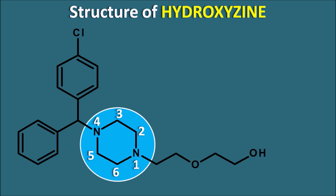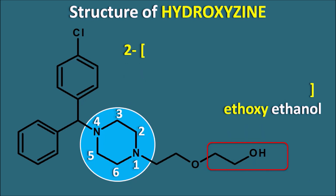Hydroxyzine is a diphenylmethane attached with piperazine at the fourth position. For the IUPAC name, the principal functional group is the OH (alcohol) group, which is attached by a two-carbon chain, so the suffix of the name is ethanol. This ethanol is attached by oxygen and then an ethyl bridge, giving a 2-ethoxyethanol group.